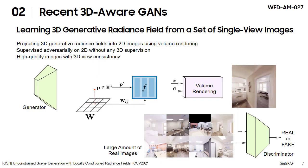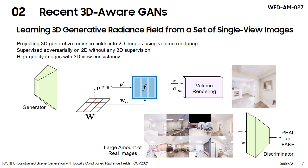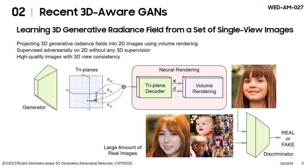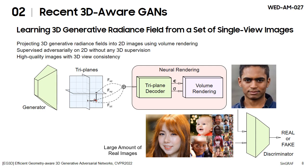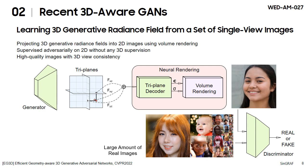GSN is extended to synthesize radiance fields of indoor scenes, enabling 3D-moving cameras, while EG3D improves efficiency and quality using tri-plane representation.